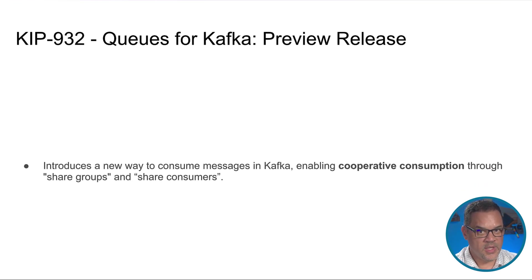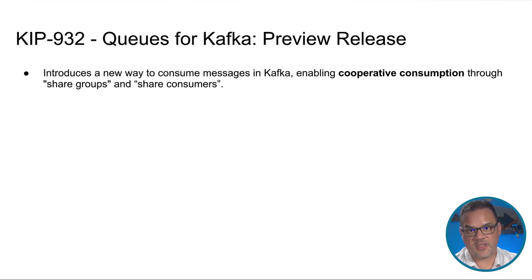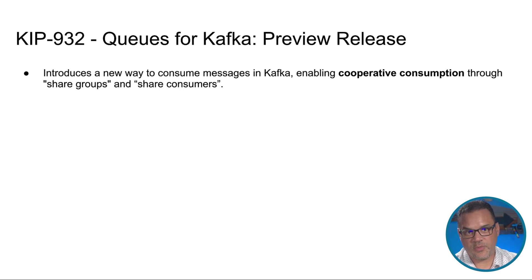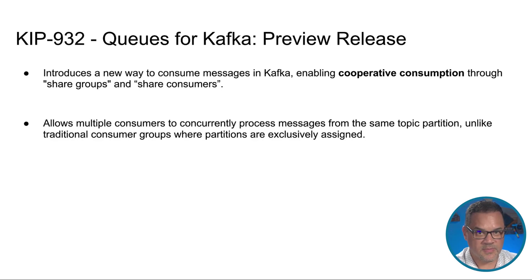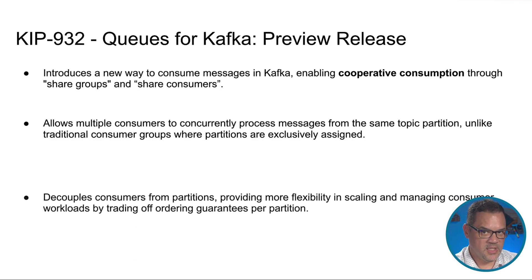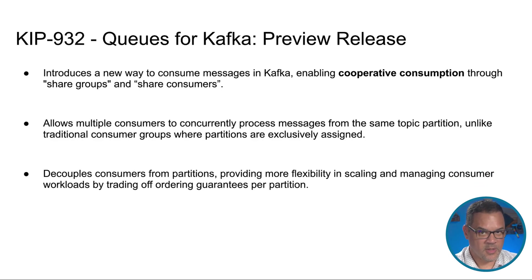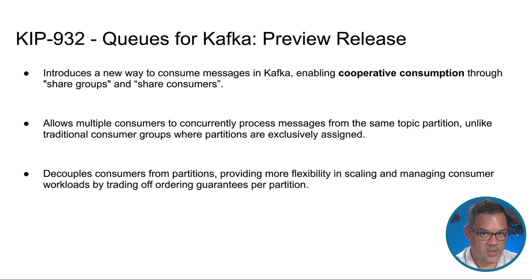This KIP introduces a new way to consume messages in Kafka, enabling share groups and share consumers. Unlike your traditional consumer groups, these share consumers cooperate to process messages from the same topic partition. This decouples your consumers from the number of partitions of your topic, meaning you've got more flexibility in how you scale consumer workloads.